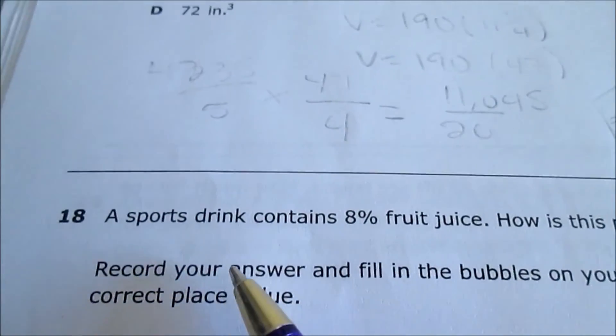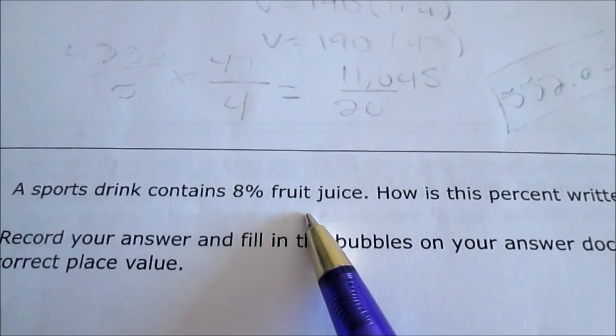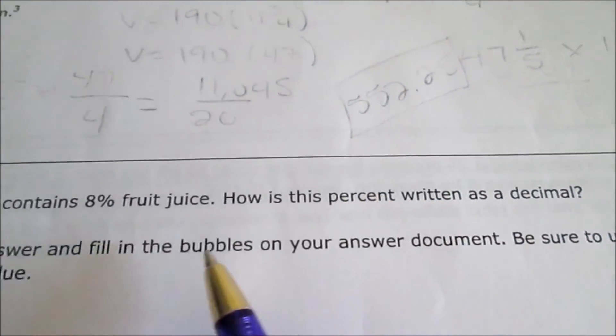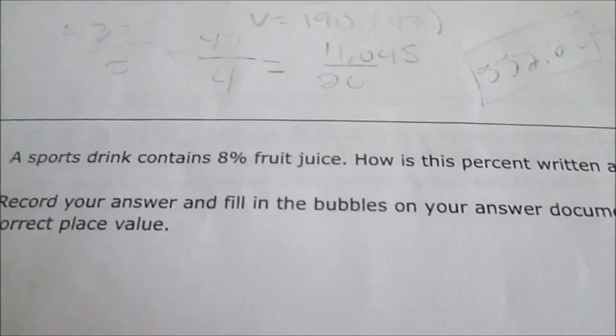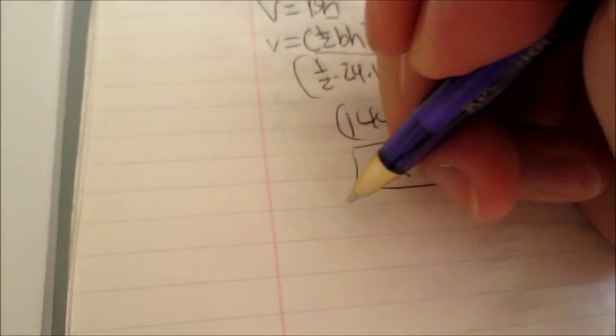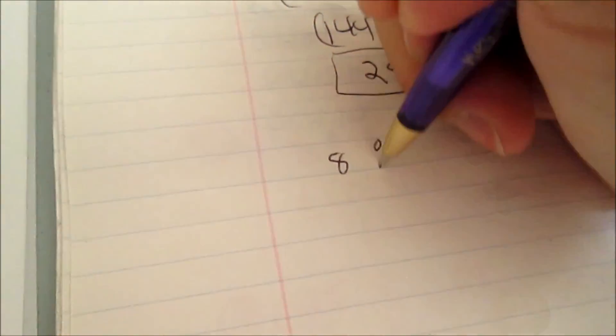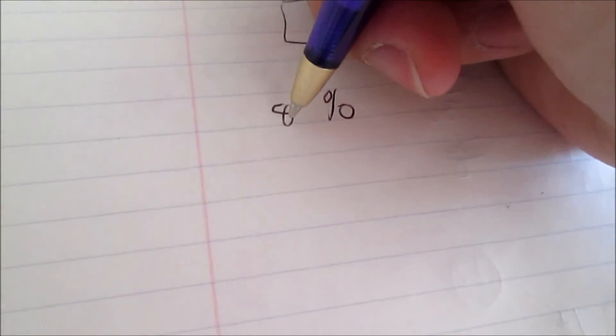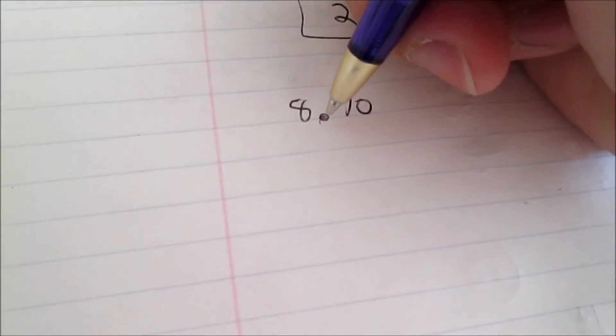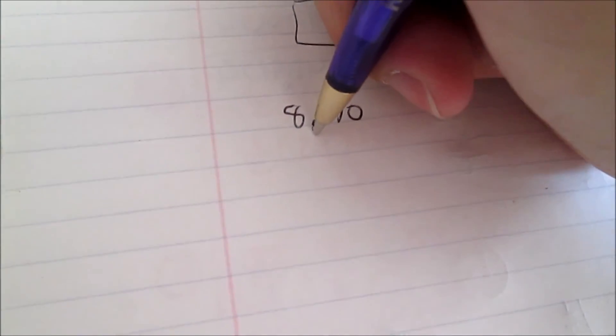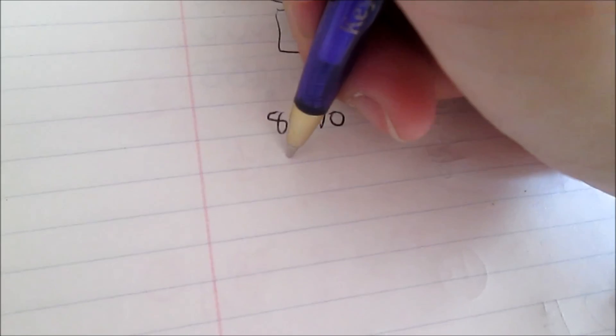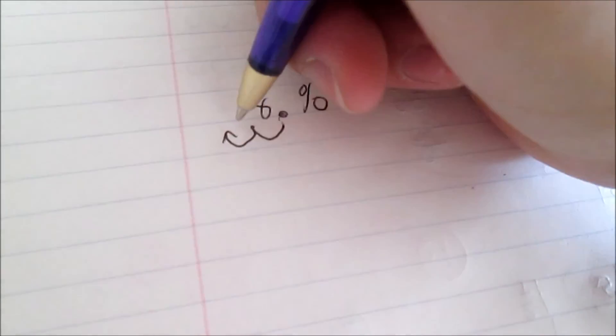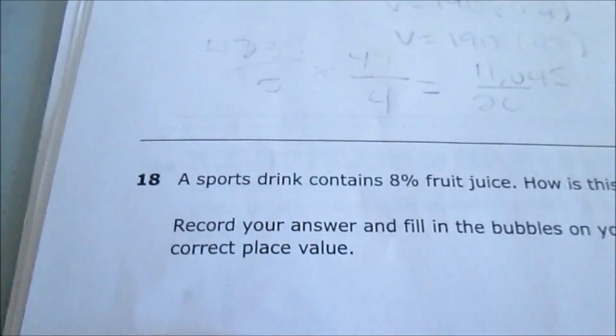Number 18: A sports drink contains 8% fruit juice. How is this percent written as a decimal? All you have to do is write the percent first, 8%. Normally when it's just a whole number, the decimal goes at the end. To change it to a decimal, I move this decimal left two spaces. And if there's a gap here, I put a zero, so it's 0.08. That is 8%.